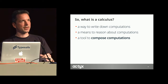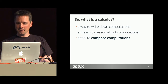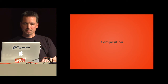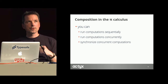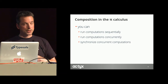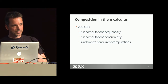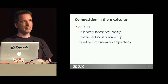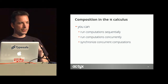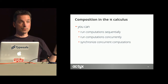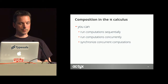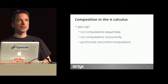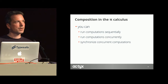This brings us closer to the title: it's really about composition. What means of composition do we have in the pi calculus? We can run things sequentially with a dot — first that, then that. We can compose in parallel with the vertical bar. And with message send, we have the ability to synchronize different processes that run together. So we have quite powerful means at our disposal.